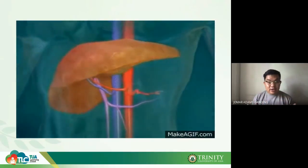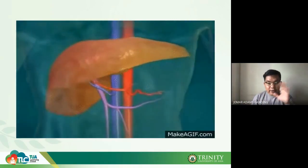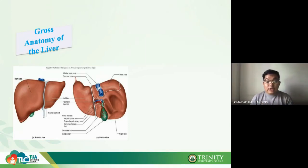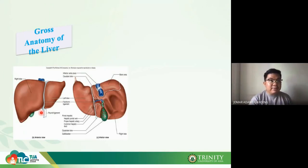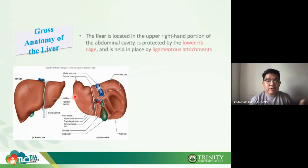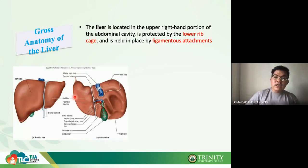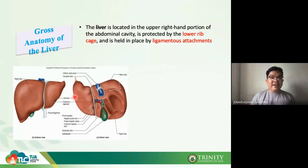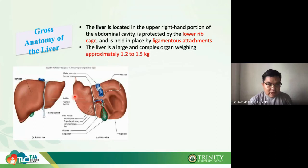Let's go to the gross anatomy of the liver. Your liver is divided into two lobes — your right and your left lobe. The right lobe of your liver is six times larger than the left lobe. Your liver is located on the upper right portion of your abdominal cavity and is protected by your lower rib cage, held in place by ligamentous attachments.